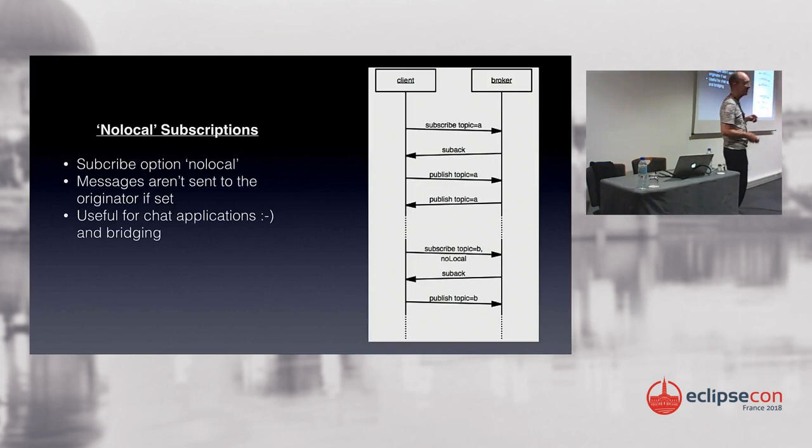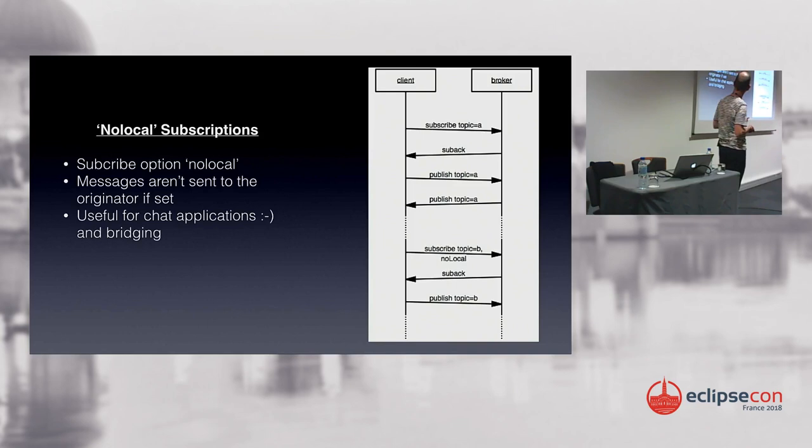MQTT has always allowed implementation options to let people build servers efficiently. If we had prescribed an algorithm for shared subscription distribution, it would never have been perfect and people would have wanted to change it. So leaving it unspecified was really the only way forward.